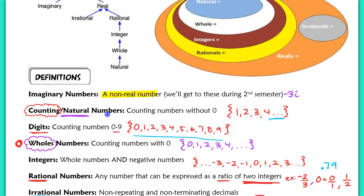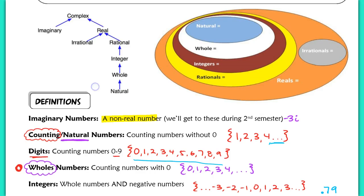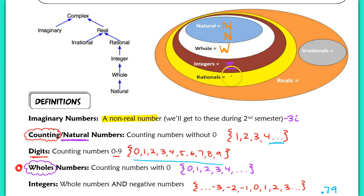Let me give you the abbreviations mathematicians use for these number sets. Natural numbers use a fancy N, whole numbers use a fancy W, integers use Z, rational numbers use Q — which stands for quotient, because of the word ratio — and real numbers use a double-bar R. For irrational numbers, there is no symbol.